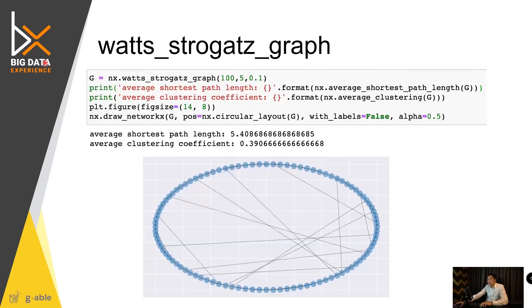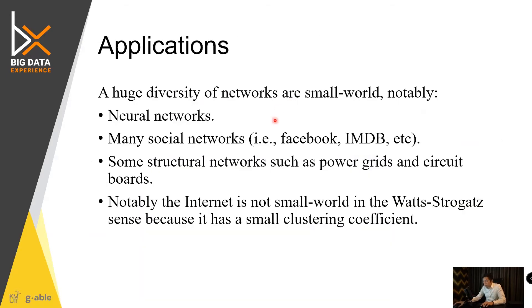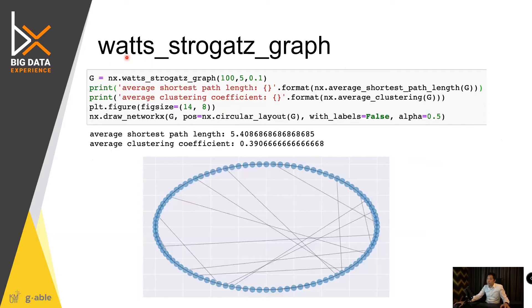So, there's this Watts-Strogatz graph that is one of the algorithms that can create this behavior. It's actually the exact algorithm that I just described — it kind of hyper-jumps, creating the jump between the connection between the community here.